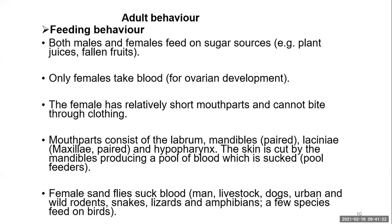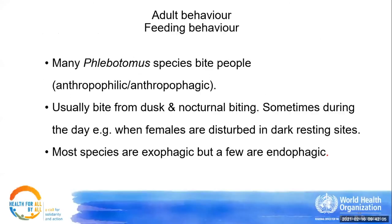Regarding feeding behaviour, both males and females feed on sugar sources such as plant juices and fallen fruits, but only females take blood for ovarian development. The female has relatively short mouthparts and cannot bite through clothing. The mandibles cut the skin producing a pool of blood which is sucked — they are pool feeders. Female sandflies suck blood from humans, animals, and a few species of birds. Many Phlebotomus species bite people and are known as anthropophilic or anthropophagic.